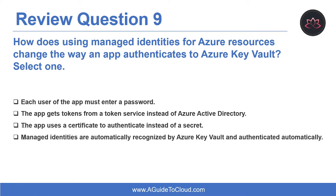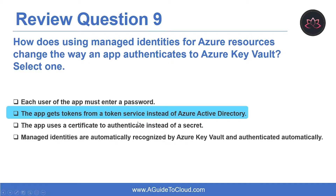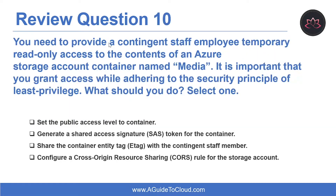Question nine: how does using managed identities for Azure resources change the way an app authenticates to Azure Key Vault? The correct answer is: the app gets a token from a token service instead of Azure Active Directory. When you enable managed identity on your web app, Azure activates a separate token-granting REST service specifically for use by your app, and your app requests tokens from this service instead of Azure AD.